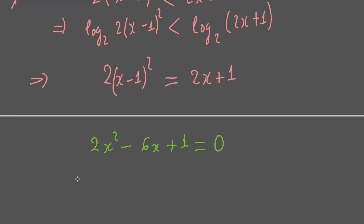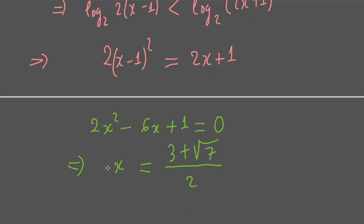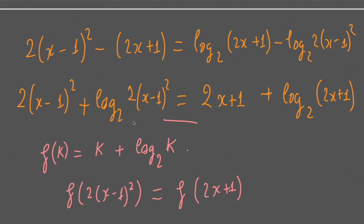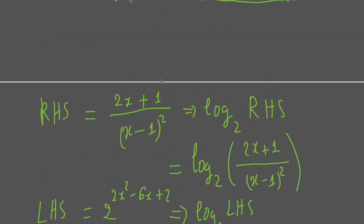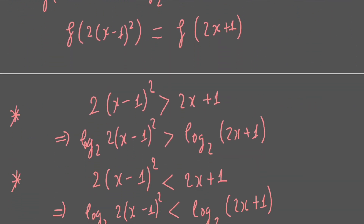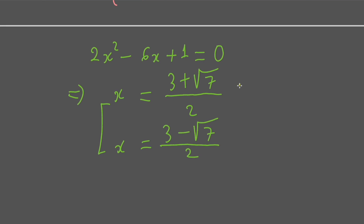Solving 2x² − 6x + 1 = 0 gives x = (3 + √7) / 2 or x = (3 − √7) / 2. Comparing these roots with the domain conditions (x > −1/2 and x ≠ 1), both values satisfy the conditions. So the final solution is x = (3 + √7) / 2 or x = (3 − √7) / 2.